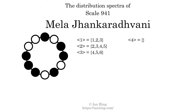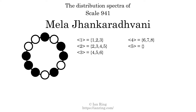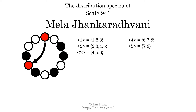The generic interval of four scale steps comes in three different specific interval sizes: six semitones, seven semitones, and eight semitones. The spectrum width of this generic interval is two. The generic interval of five scale steps comes in four different specific interval sizes: seven semitones, eight semitones, nine semitones, and ten semitones. The spectrum width of this generic interval is three.